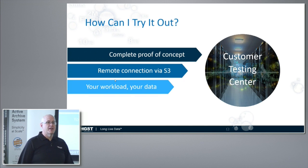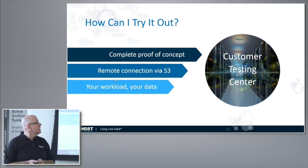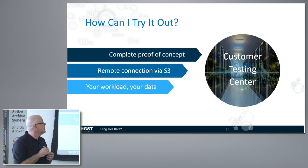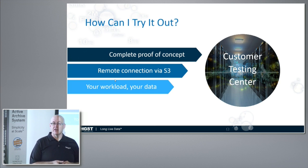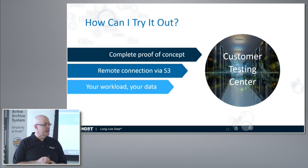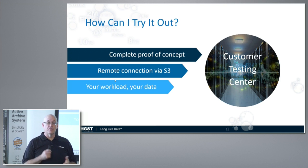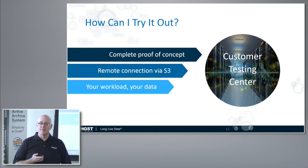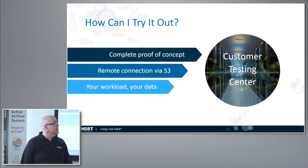How do we try this out? We have a customer proof of concept center here in Santa Clara in our Colo facility. It's really difficult to ship a 2,500-pound rack to people for testing. So we've provided a way for people to do functional testing over an internet connection via S3, and to do performance testing locally inside our Colo with machines we provide for customer data. We've gone through about 10 different customer proof of concepts now over a wide range of customers, and they've all been very successful. That has made it a lot easier to demonstrate how simple this works and how performant it is.